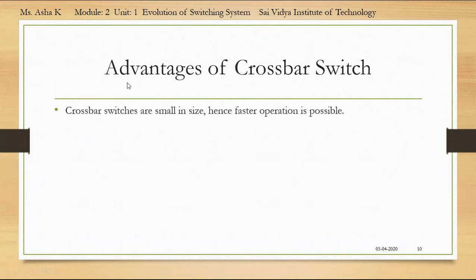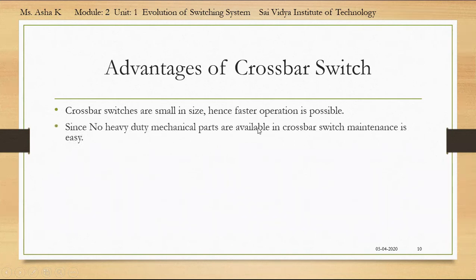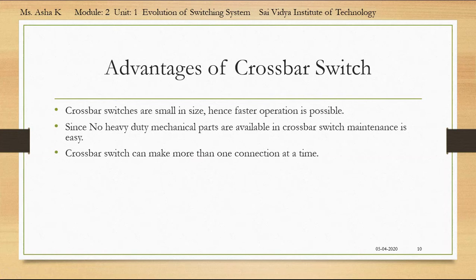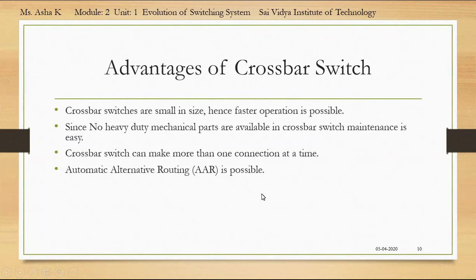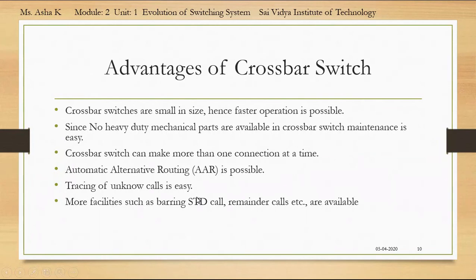The main advantages of crossbar switches are: small in size, hence faster operation is possible; since no heavy-duty mechanical parts are present, maintenance is easy; a crossbar switch can make more than one connection at a time — a 10×10 switch will have 10 simultaneous connections; automatic alternative routing is possible — when a direct connection fails, another alternative path is accessed by the marker control device; tracing of unknown calls is easy because data is stored in the register; more facilities such as barring STD (Subscriber Trunk Dialing) calls, reminder calls, etc. are available; and less wear and tear is also an advantage.